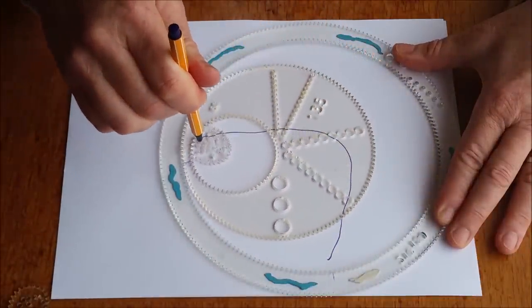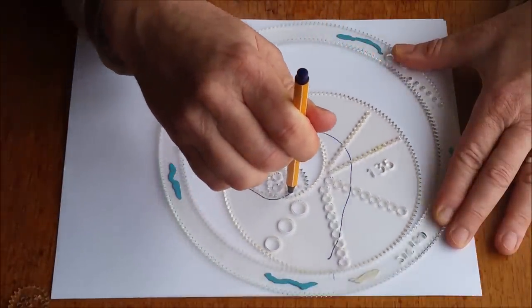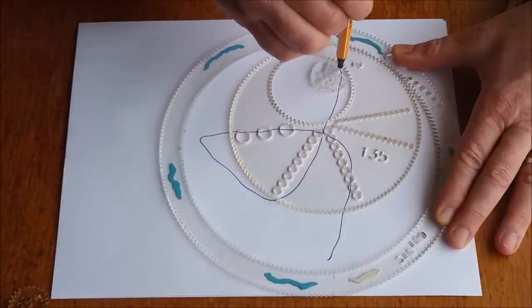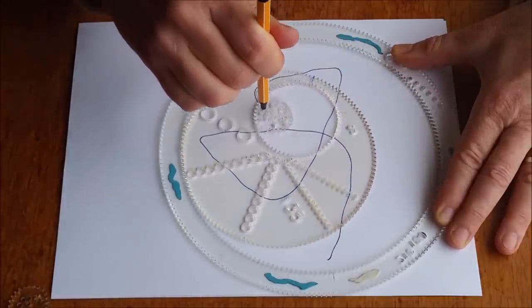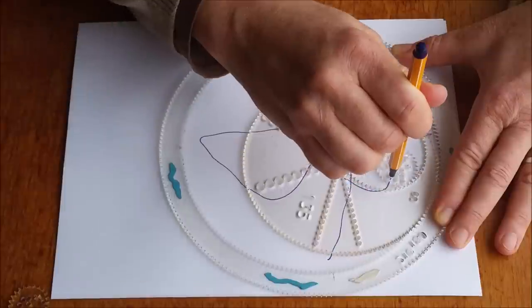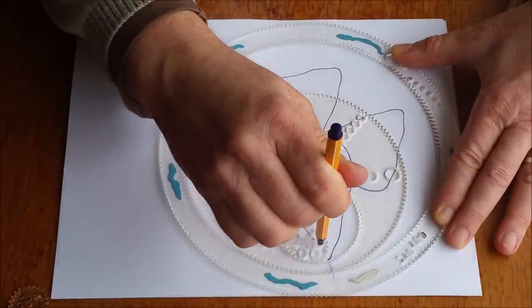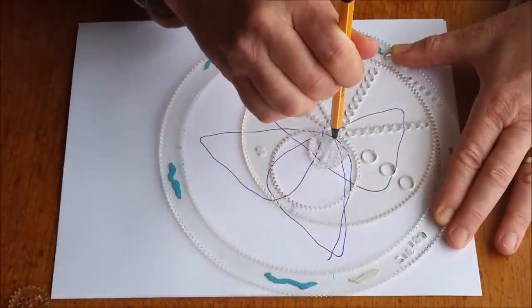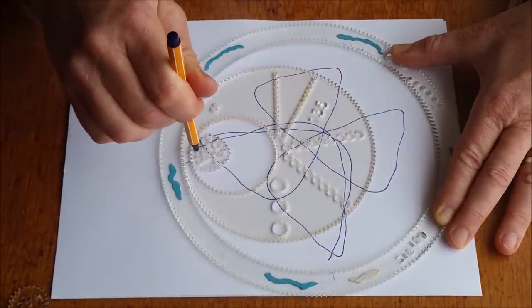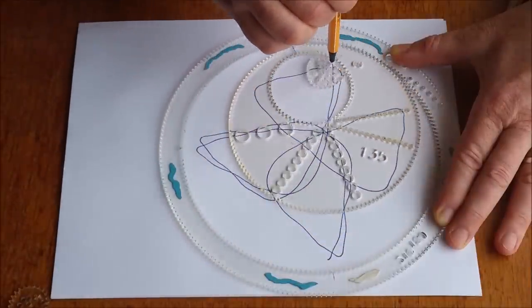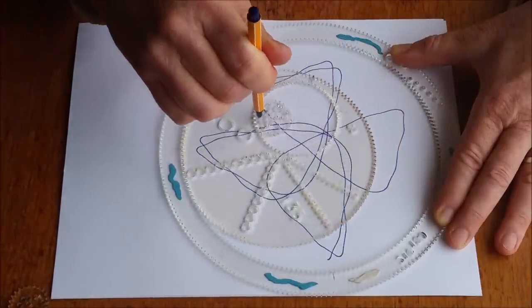Now you see the triangular wheel kind of creates not as smooth a line. Although there is a pattern to it as it goes boom, boom, boom.